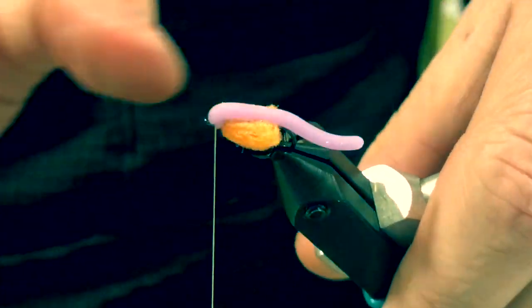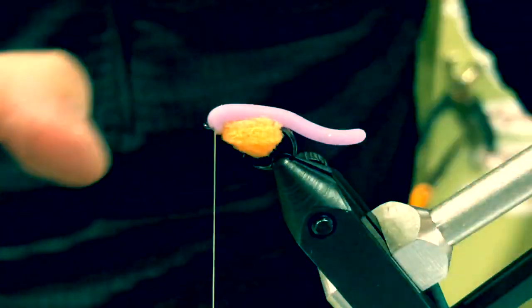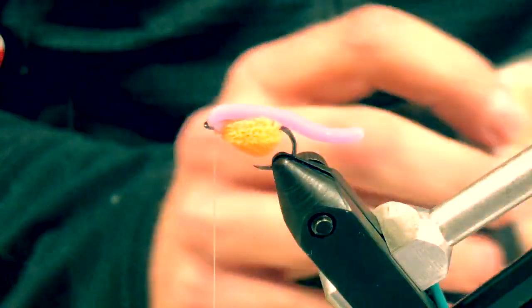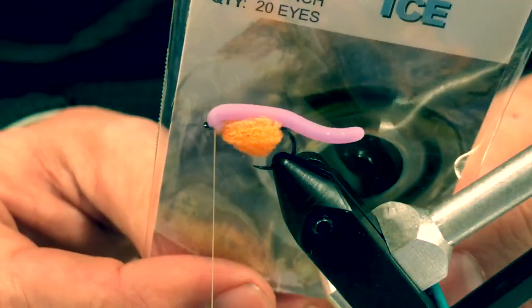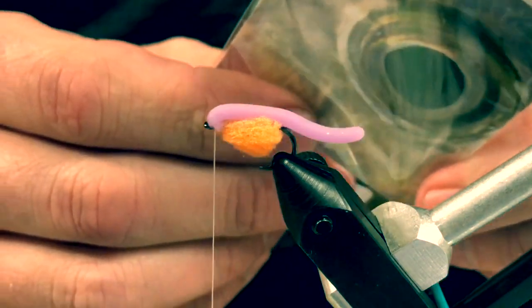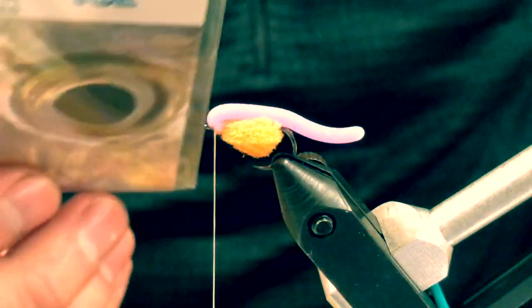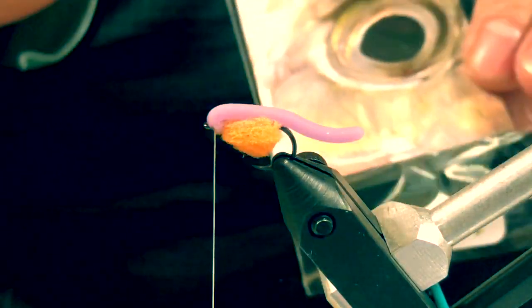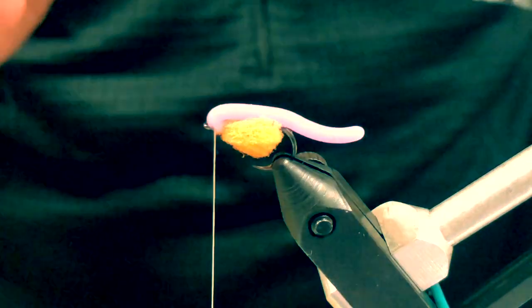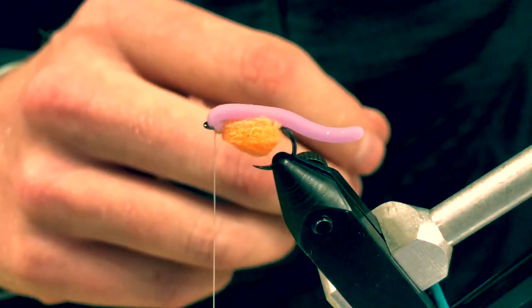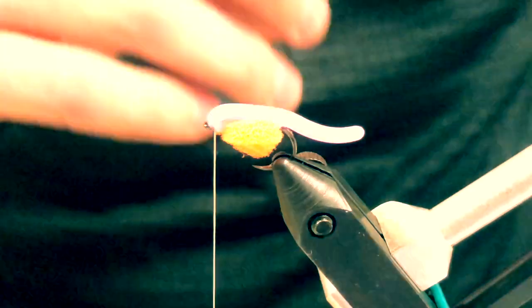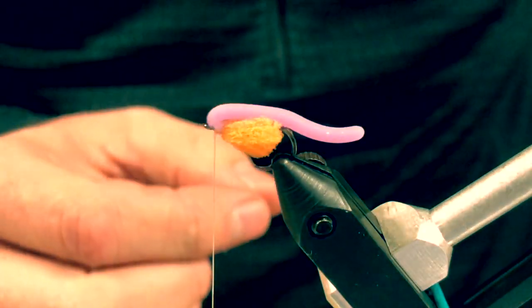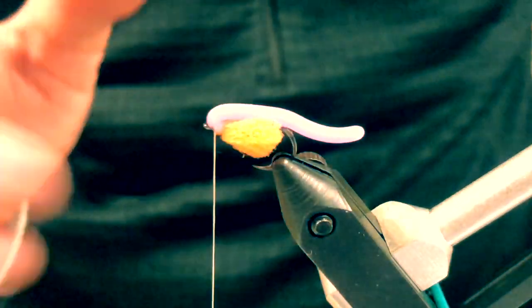Now we're gonna put our little eyes on. The eyes that I like to use are these Living Eyes, 3 millimeter—doesn't really matter what eyes you've got as long as they're 3 millimeter. But I do like the Living Eyes because they're a little bit flatter than the 3D adhesive eyes. Those 3D eyes are very dome-shaped, and for a fly this small I like these eyes because they're real streamlined and flat.